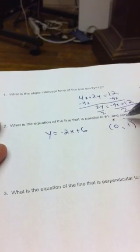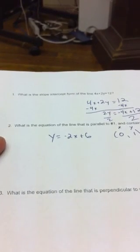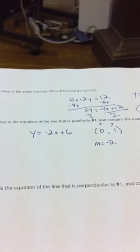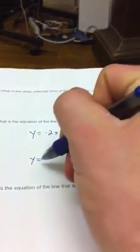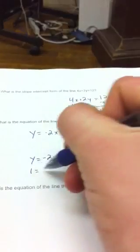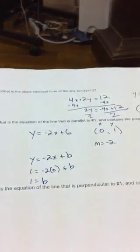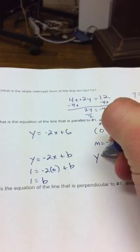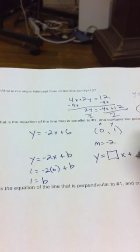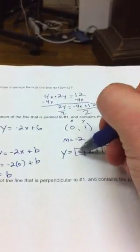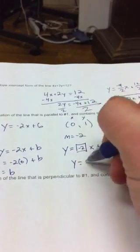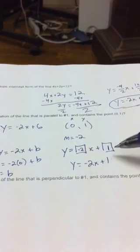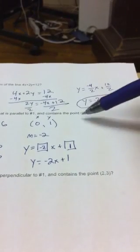I'm going to write x and y above this point so I remember which is which. Our slope m is identified as negative 2. The parallel slope is always the same, but we need a different b. So we set this up as y equals negative 2x plus b, subbing in x and y from the point. So 1 equals negative 2 times 0 plus b, giving us b equals 1. So y equals negative 2x plus 1. That is parallel to the original and contains the point 0, 1.